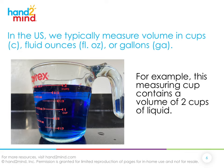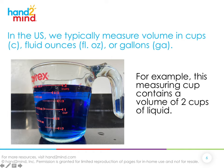In the US, we typically measure volume in cups — using the symbol C — fluid ounces, or gallons, using the symbol GA. For example, this measuring cup contains a volume of two cups of liquid. Since the two-cup mark is the top of the cup, this measuring cup also has a capacity of two cups — meaning that's the most we can measure in this measuring cup.